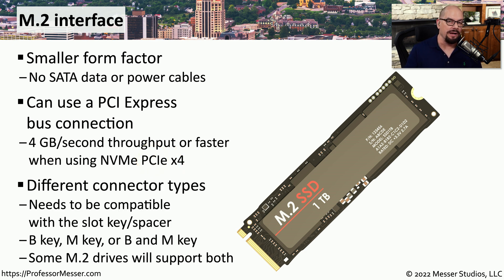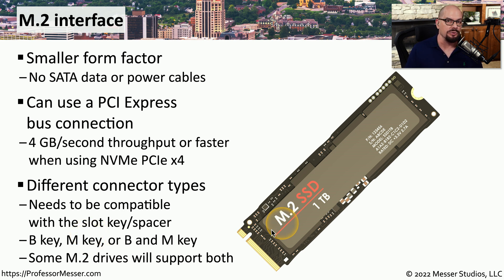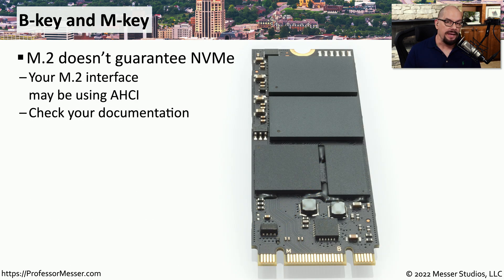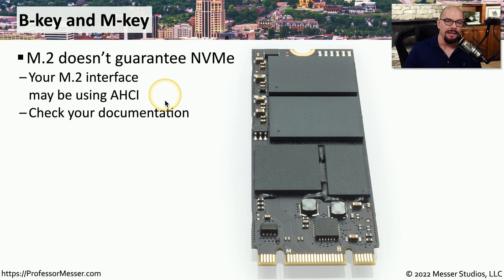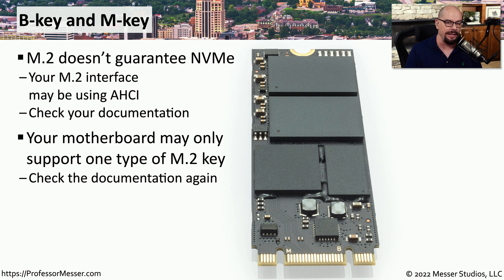If you're planning to use this type of drive on your system, you should know that there's more than one type of M.2 interface. We refer to these as keys with different names: there's a B key, an M key, and some M.2 interfaces support both the B and M key. To get the best possible throughput for an M.2-based SSD, you want to be sure your system supports NVMe. Your M.2 interface may only be using the traditional AHCI throughput seen with a SATA connection, so you'll need to check the documentation for your motherboard. Your motherboard might also only support one type of M.2 key — M or B — so you need to make sure you're buying the right M.2-based SSD for your motherboard.